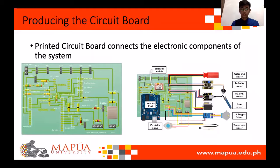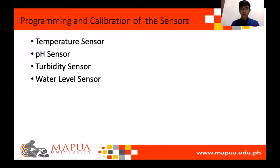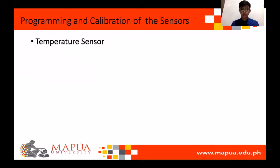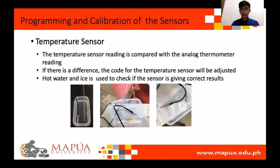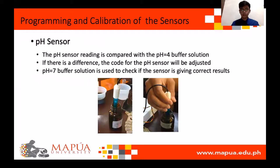Programming and calibration of the sensors. For the temperature sensor, readings are compared with an analog thermometer reading. If there is a difference, the code is adjusted. Cold and heated water are also tested to check the calibration. For the pH sensor, it is inserted in a pH 4 buffer solution. If the sensor reading is not 4, the code is adjusted. pH 7 buffer solution is also tested to check the calibration.